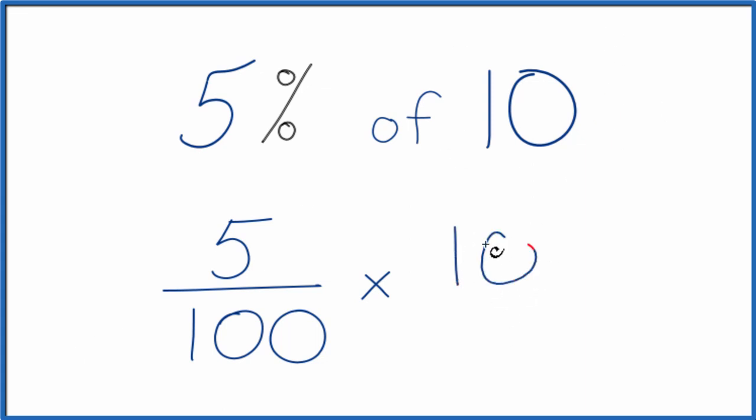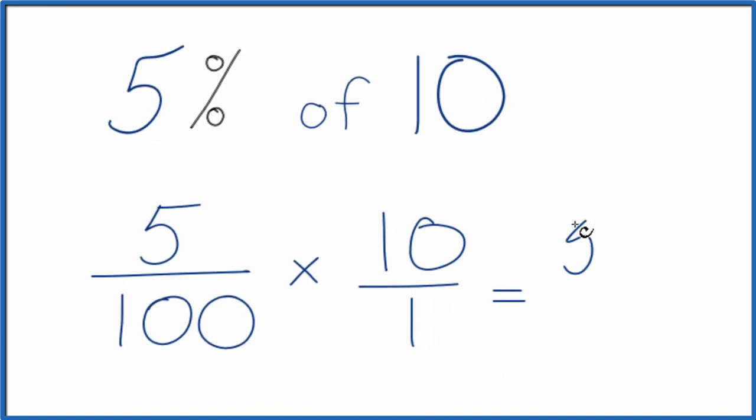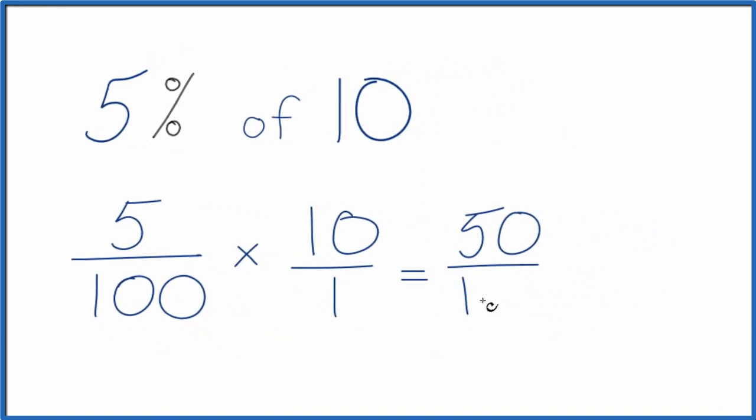Let's put it 10 over 1, because 10 divided by 1 is still 10, but now the numerators and the denominators, they line up. 5 times 10, that's 50, and 100 times 1, that's 100.